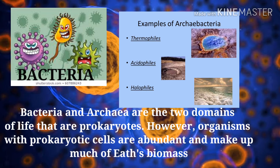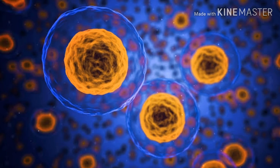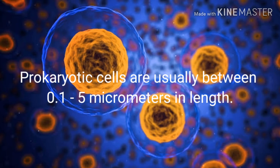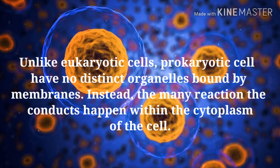Organisms with prokaryotic cells are abundant and make up much of Earth's biomass. Prokaryotic cells are usually between 0.1 to 5 micrometers in length. Unlike eukaryotic cells, prokaryotic cells have no distinct organelles bound by membranes; instead, the main reactions the cell conducts happen within the cytoplasm of the cell.